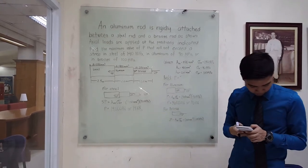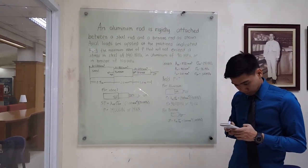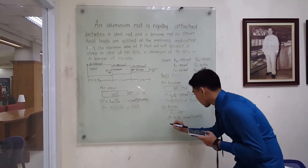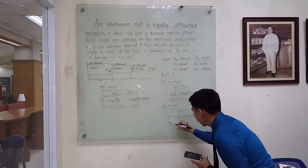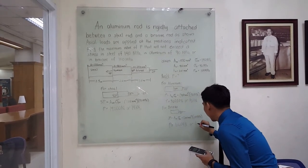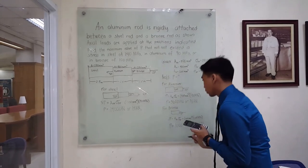P is equal to 10,000 Newton or 10 kilonewtons.